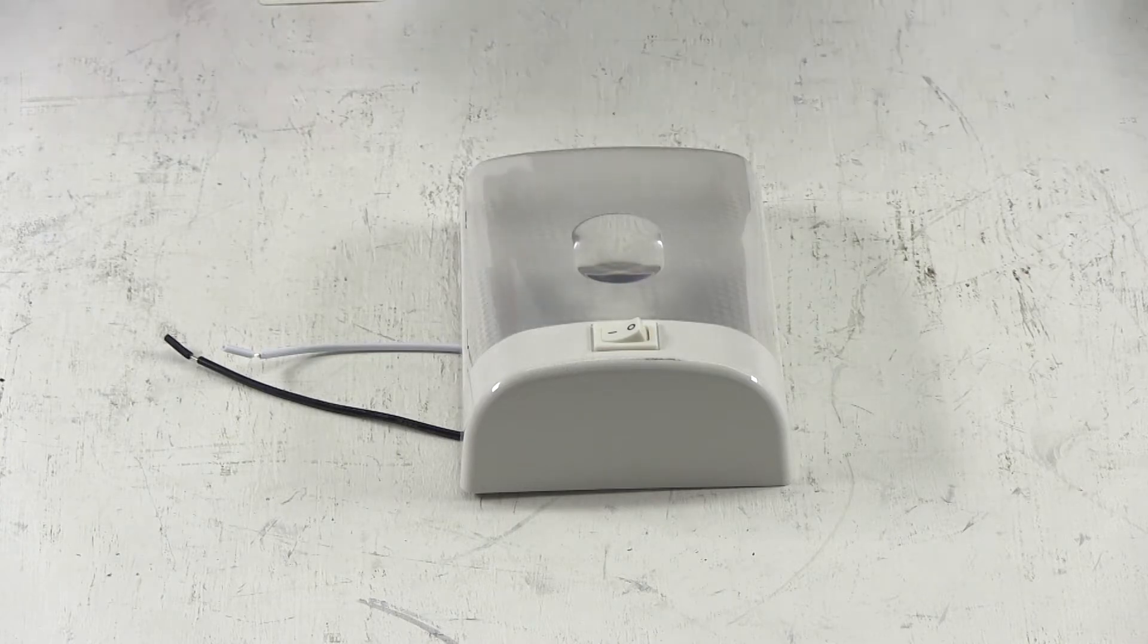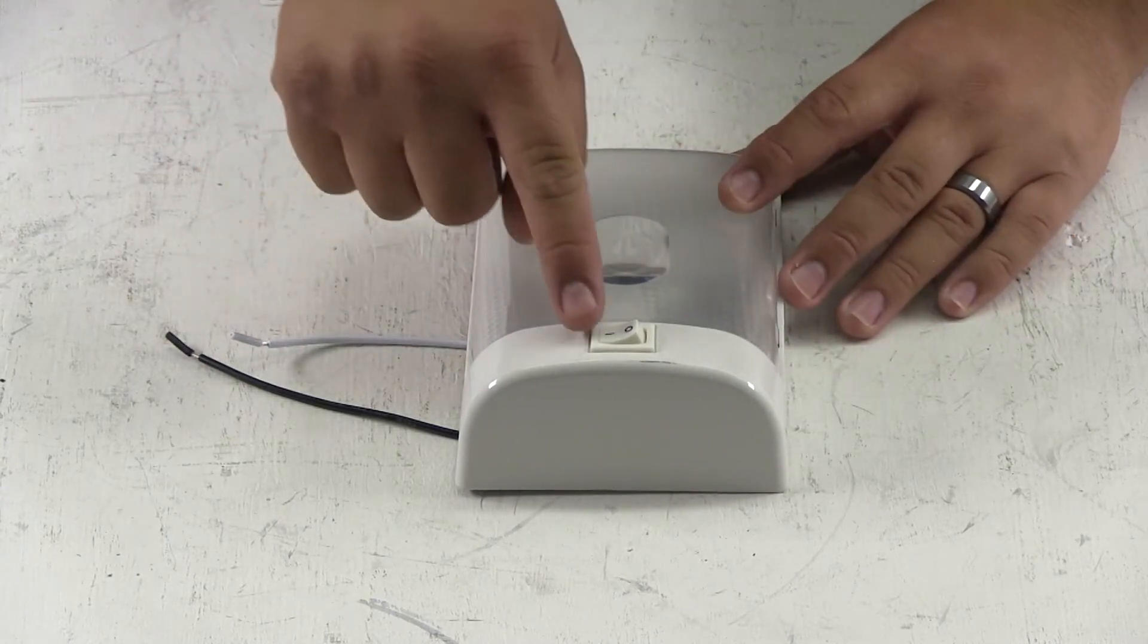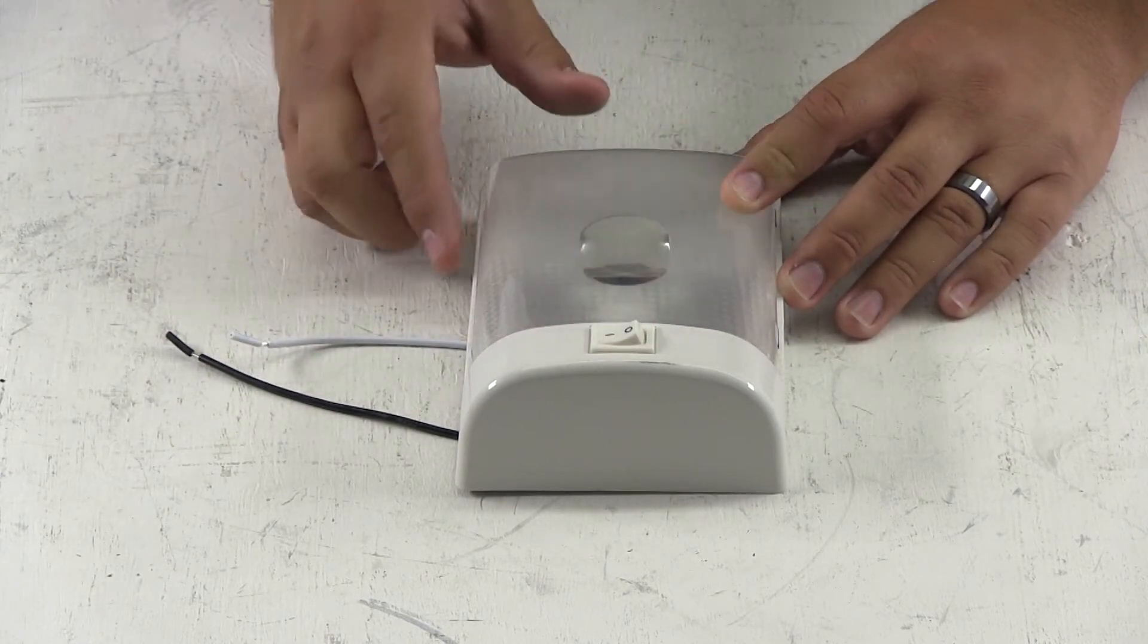Both the lens and the bulb on this unit are replaceable. At the bottom is a toggle switch for turning the light off and on.